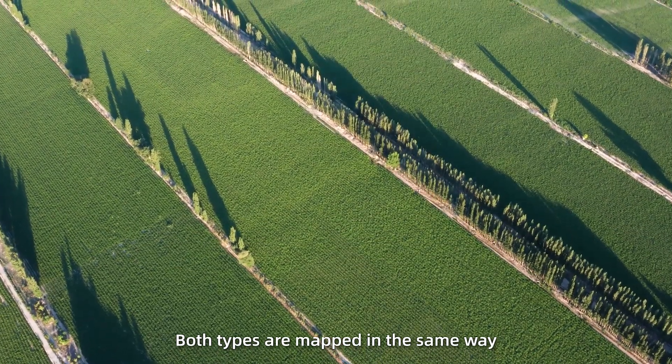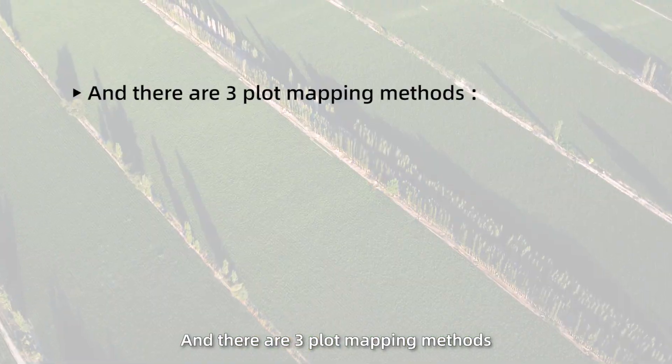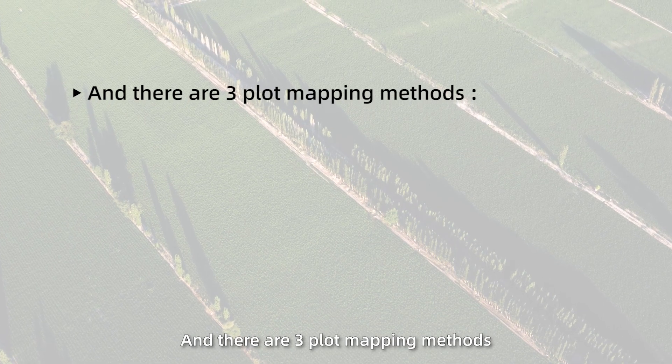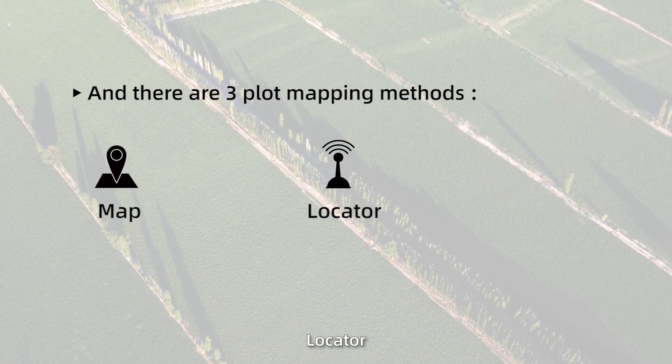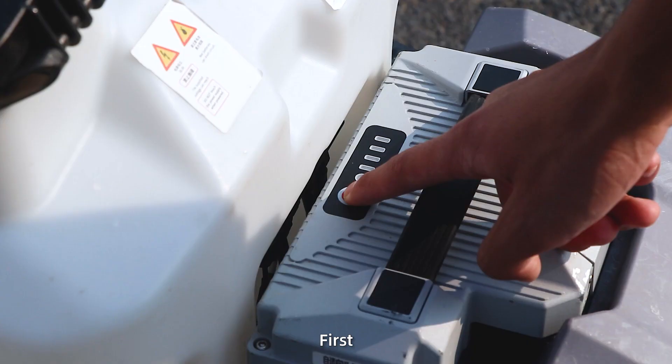Both types are mapped in the same way, and there are three plot mapping methods: Map, Locator, and Draw.